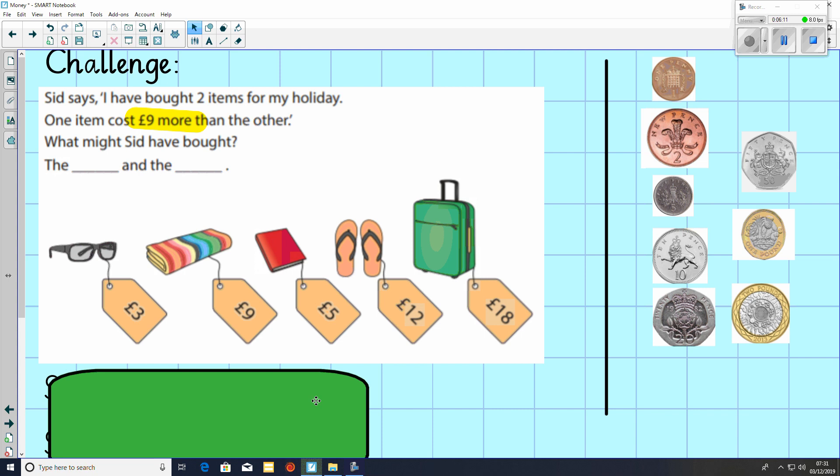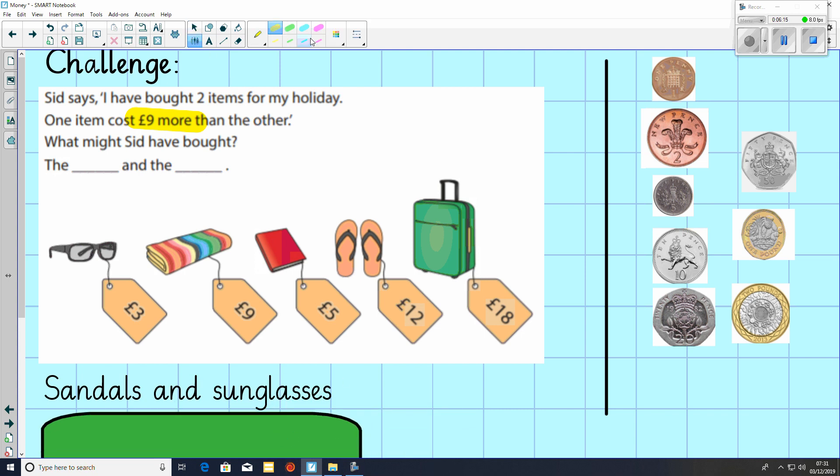So Sid could have bought the sandals and the sunglasses because the sandals cost £12 and the sunglasses cost £3. 12 subtract 3 equals 9. So they have got a difference of £9.